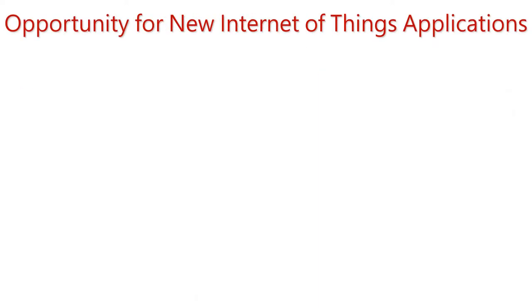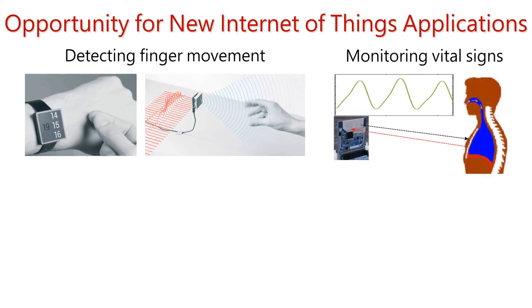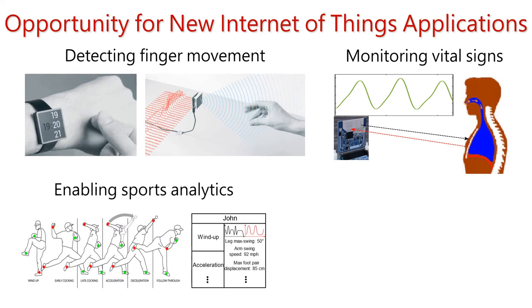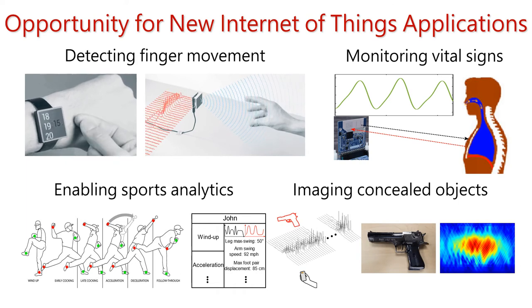Such a mass deployment also brings opportunity to enable new Internet of Things applications, such as detecting fine grained gestures, monitoring vital signs, enabling sports analytics in the field. In this work, we are interested in enabling imaging of concealed objects using 5G millimeter wave signals.